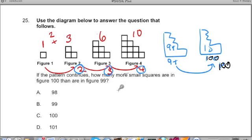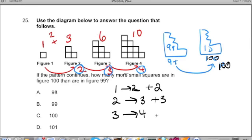There's another way to think about it. From 1 to 2, I'm adding 2 blocks. From 2 to 3, I'm adding 3 blocks. From figure 3 to figure 4, I'm adding 4 blocks. So then, wouldn't it make sense that if we're following this pattern, from 99 to 100, I'm adding 100 blocks.